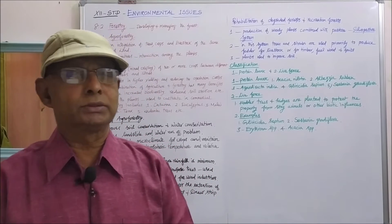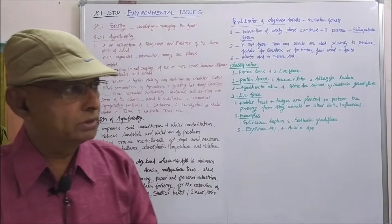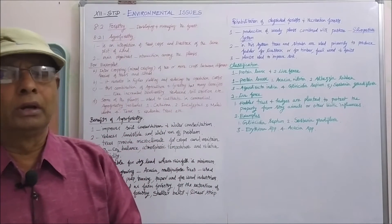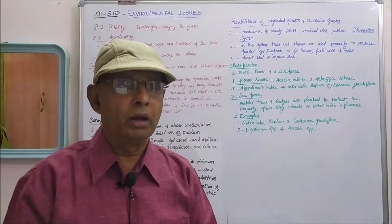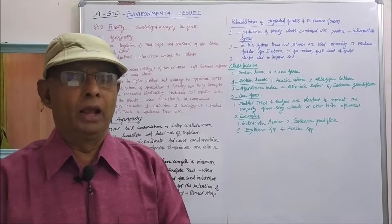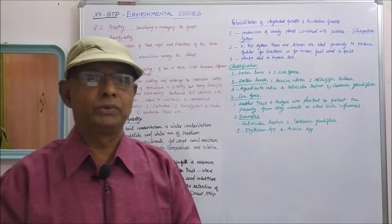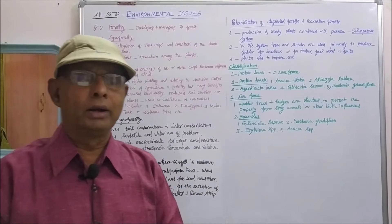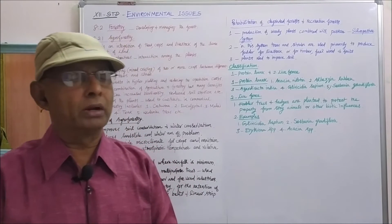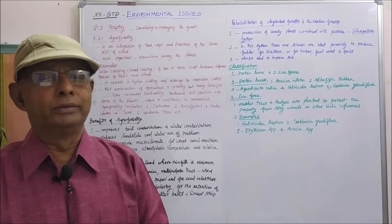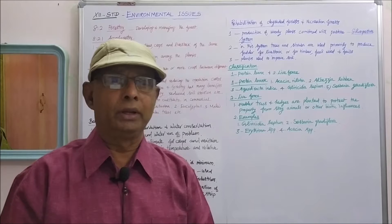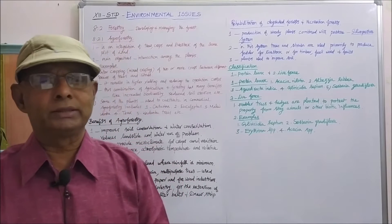There are several kinds of forestry: social forestry, agroforestry, etc. First you will see about the agroforestry. It is an integration of trees, crops and livestock on the same plot of land. The main objectives in the agroforestry is on the interaction among them.